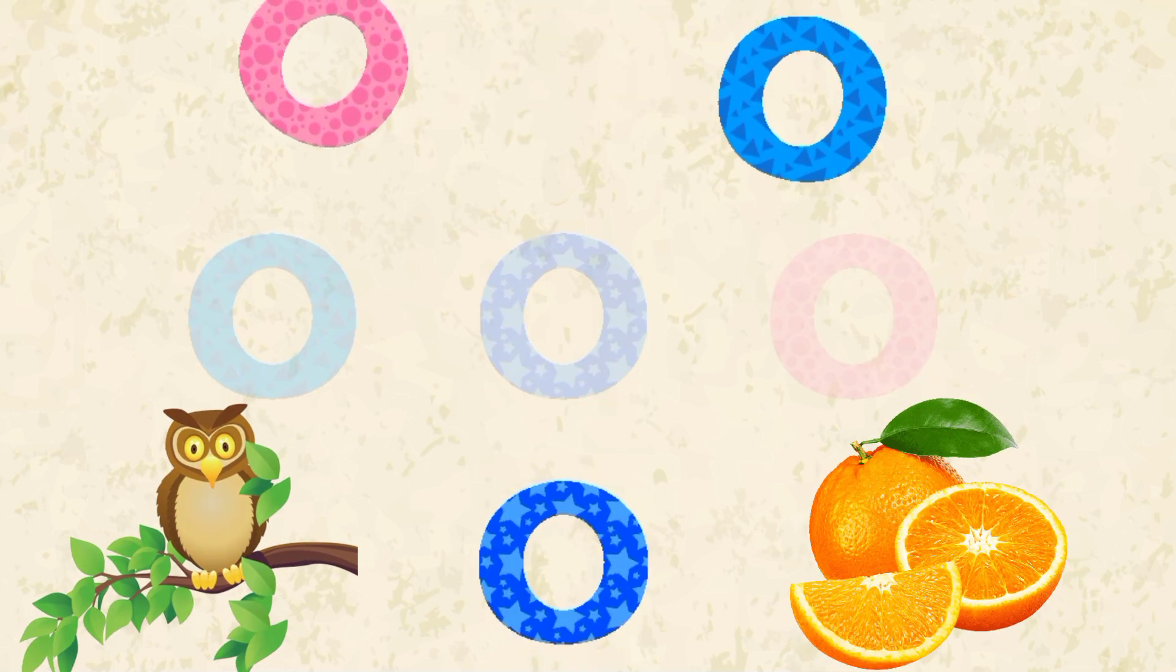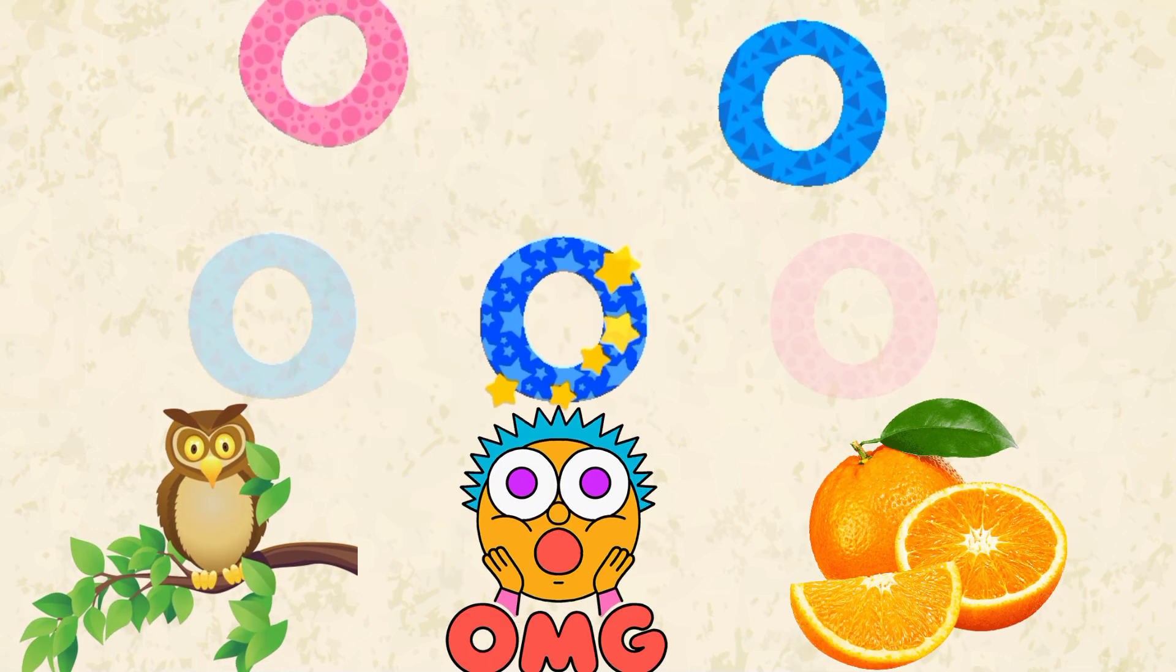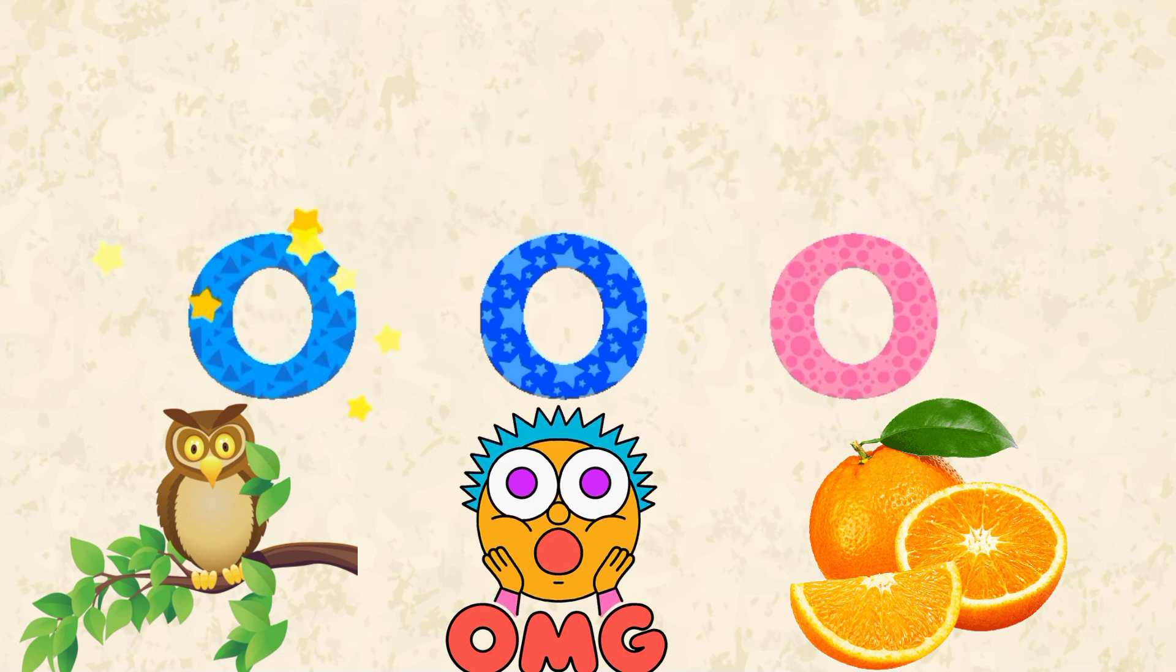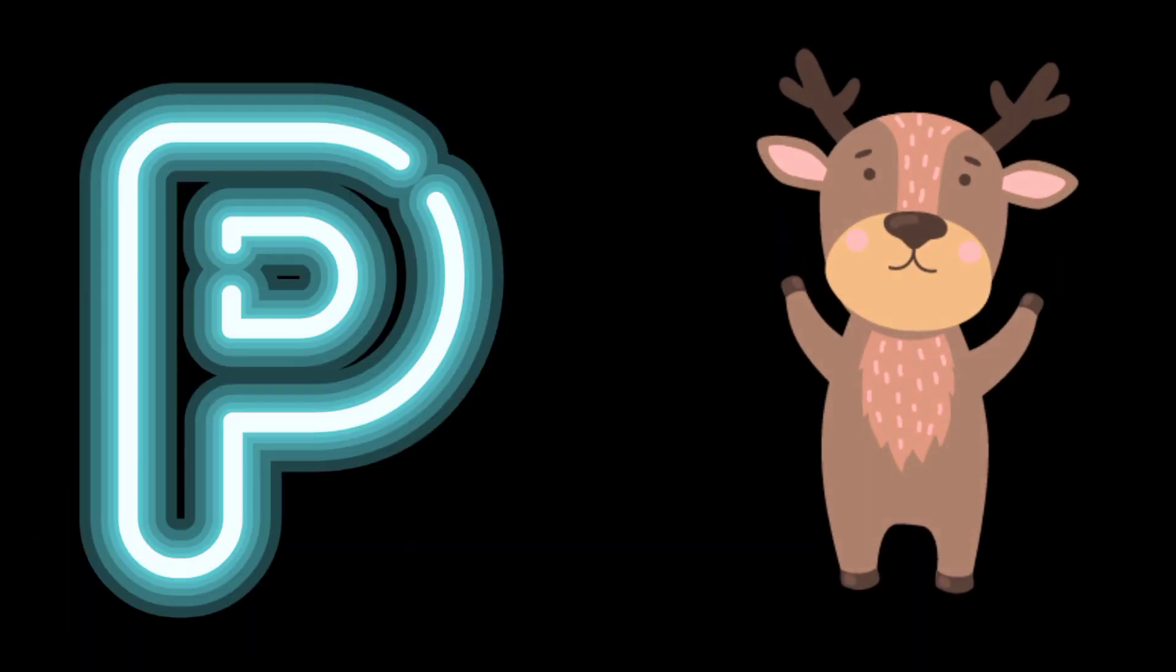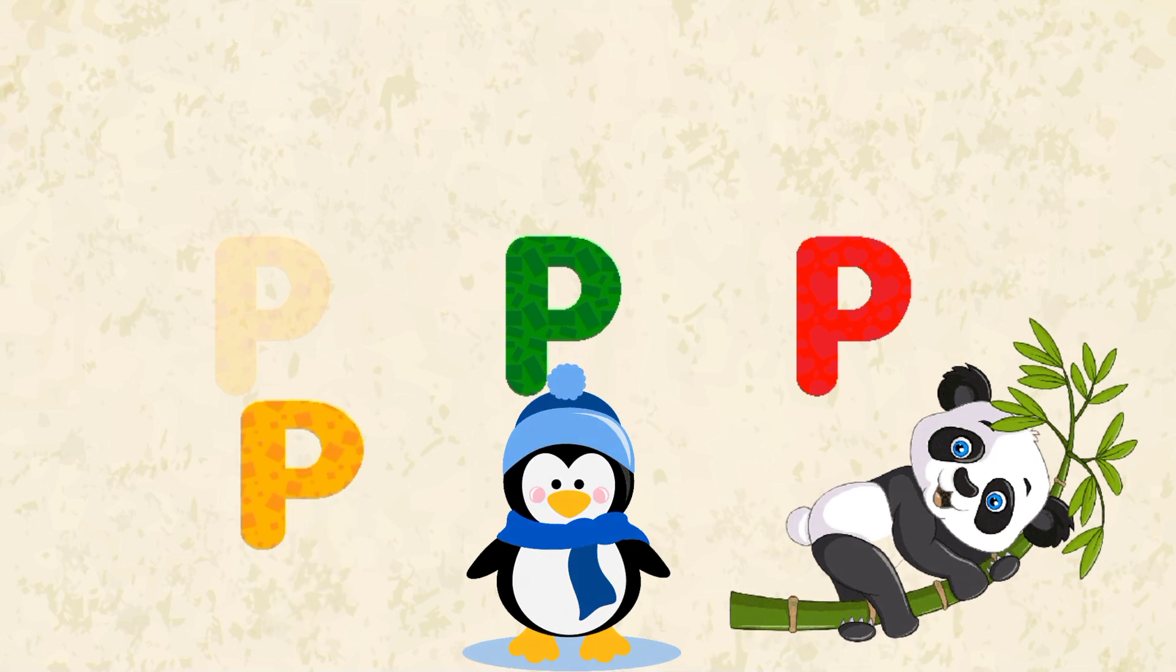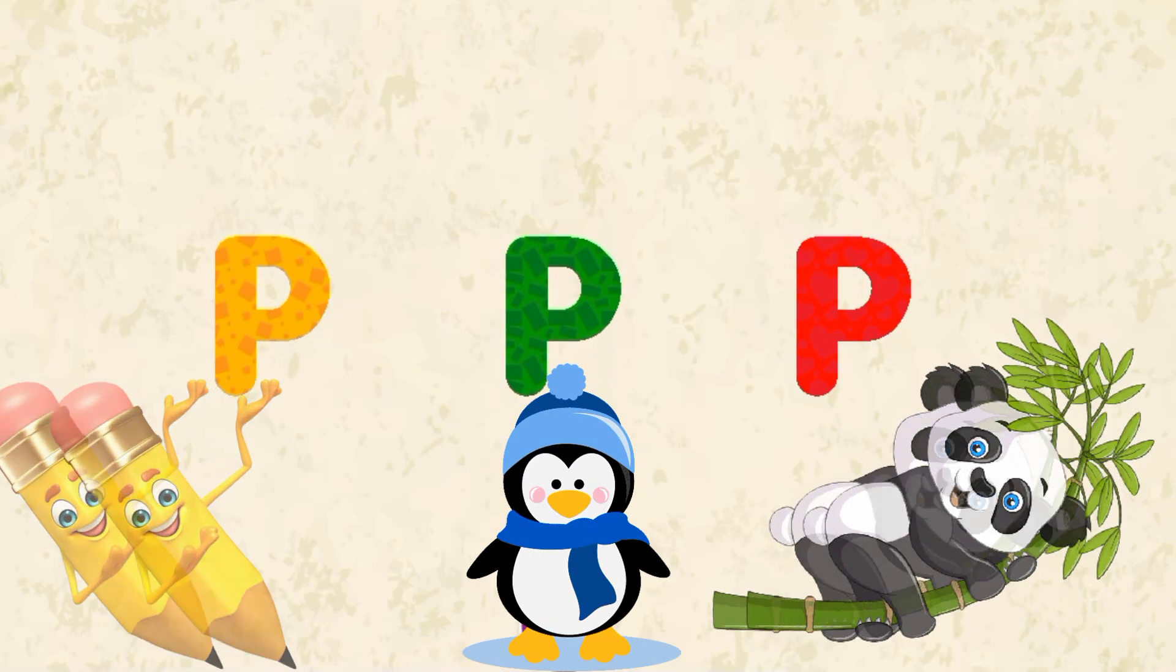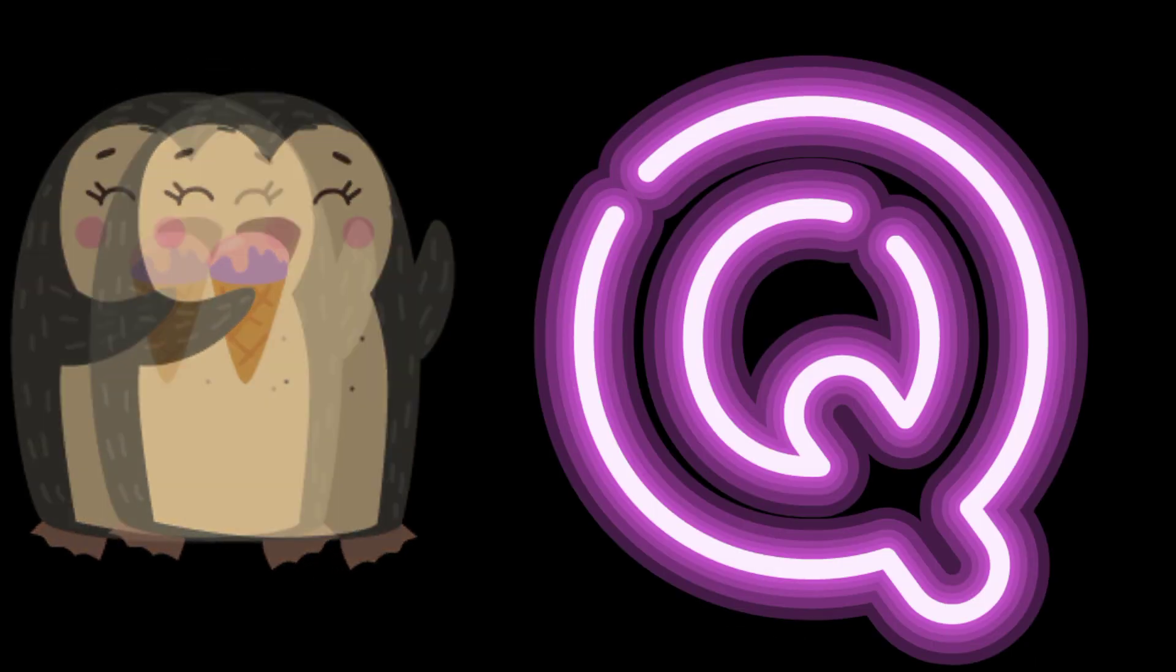O. O for Owl, O for Octopus, and O for Orange. Letter P. P for Pencil, P for Penguin, and P for Panda.